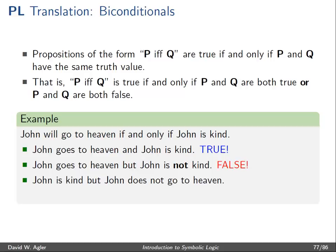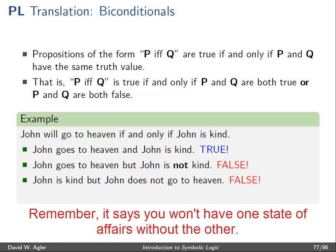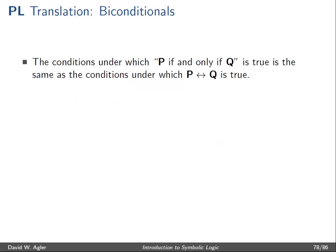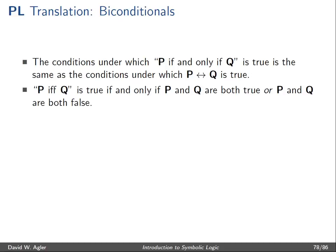Third, there is a state of affairs where John is kind but John does not go to heaven. This would make the if and only if statement false, because part of what it asserts is that if John is kind then he will go to heaven — but here he is kind and does not go to heaven. Finally, we have the state of affairs where John does not go to heaven and John is not kind. This would make the if and only if statement true. So expressions of the form P if and only if Q in English are true under the same conditions that P double arrow Q is true in the language of propositional logic.